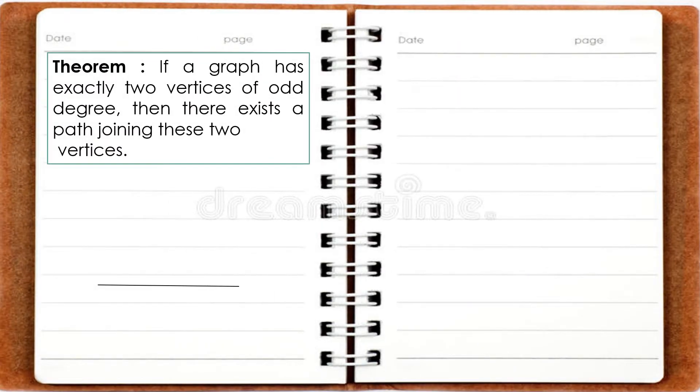In this video, I am going to show the proof for the theorem: if a graph has exactly two vertices of odd degree, then there exists a path joining these two vertices.